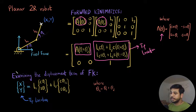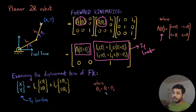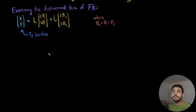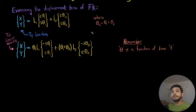Examining just the displacement term of this forward kinematics, I extract those 2 terms and write them in a slightly different form — factoring out A1 and A2, and writing theta12 as the sum of theta1 plus theta2. Now in order to find out the velocity, all I need to do is differentiate this. Differentiating gives the tip linear velocity, which is just x_dot and y_dot. Note that theta1 and theta2 are both functions of time, so differentiating gives theta_dot terms.